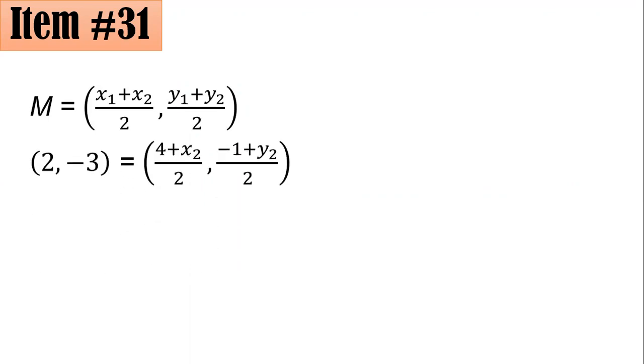By substitution, we have (2, -3) equals ((4 + x₂)/2, (-1 + y₂)/2). So this 2 equals (4 + x₂)/2, whereas this -3 equals (-1 + y₂)/2.